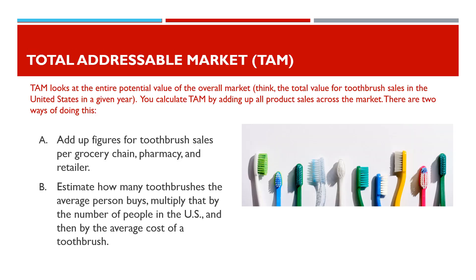TAM looks at the entire potential value of the overall market. Think for example of the total value for toothbrush sales in the United States in a given year. You calculate the TAM by adding up all product sales across the market. There are two ways of doing this.